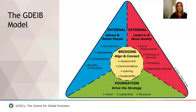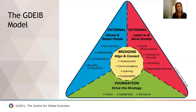I want to go through the model. It's important to understand the foundation of the model that the authors created because it was done very intentionally. There are four different groupings, and underneath each are categories. It covers everything from the foundation of a DEI program — the vision, leadership, and structure — to internal practices around attracting and retaining employees. There's also emphasis on the external piece: listening to and serving your community through products and services, marketing, procurement, and sourcing. The middle bridging group tries to align all those pieces together, measure progress, learn from it, and create sustainability of your DEI initiative.